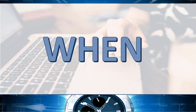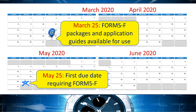Now that we know what's changing, let's dig a little deeper into timing. Forms F will be available to work on your applications at least 60 days before the first applicable due date. We plan to complete the posting of Forms F form packages to active opportunities and post the Forms F application guide by March 25. Once the application guide is posted, you'll want to read the Significant Changes section to familiarize yourself with all the Forms F instructional changes.